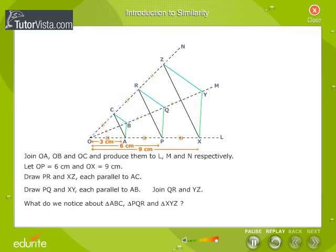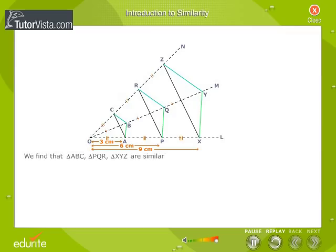What do we notice about triangle ABC, triangle PQR and triangle XYZ? We find that these triangles are similar.